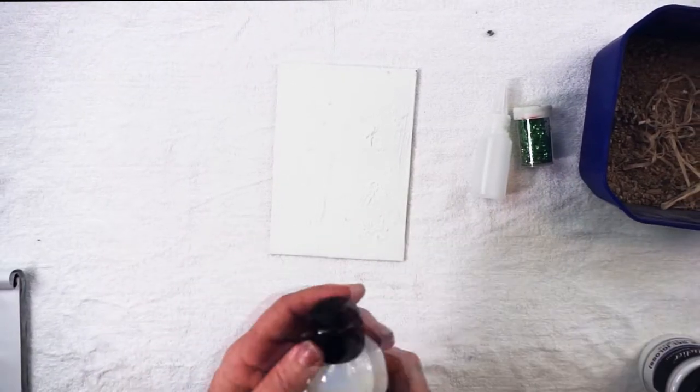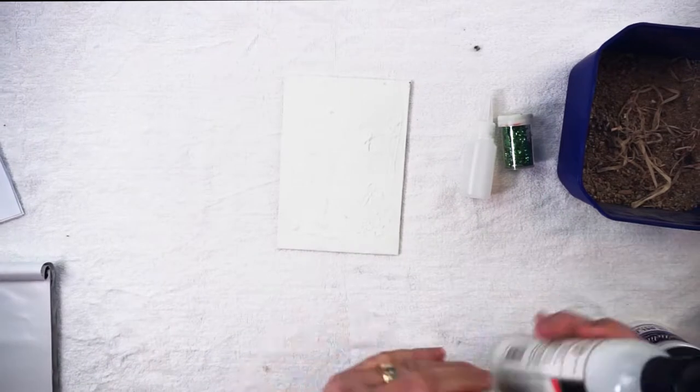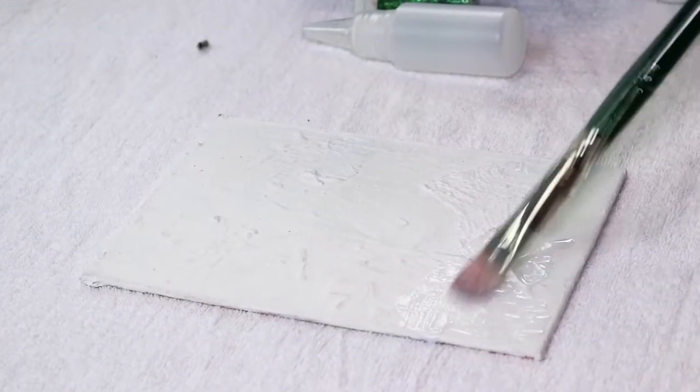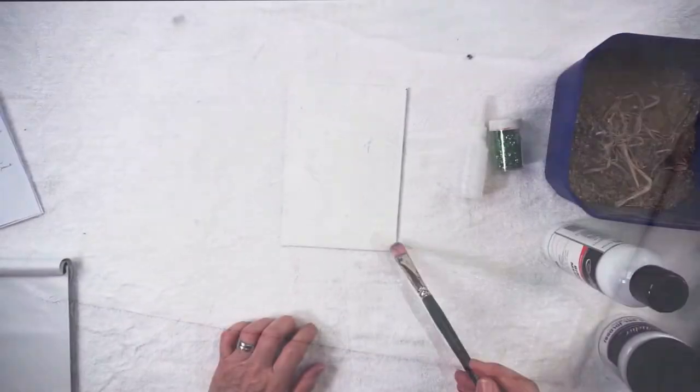So all you've got to do is spread that binder over where you want the sanded texture. It's quite a bit thinner than your regular mediums.